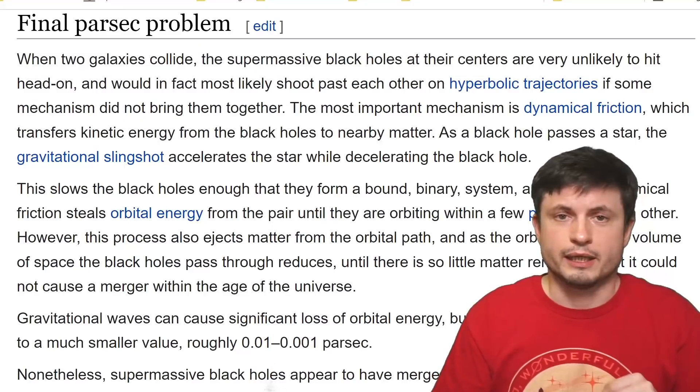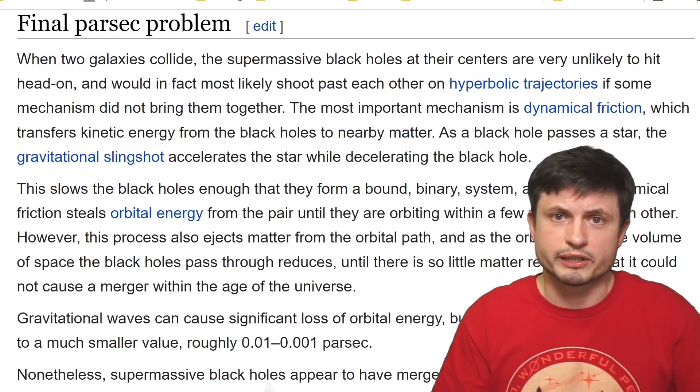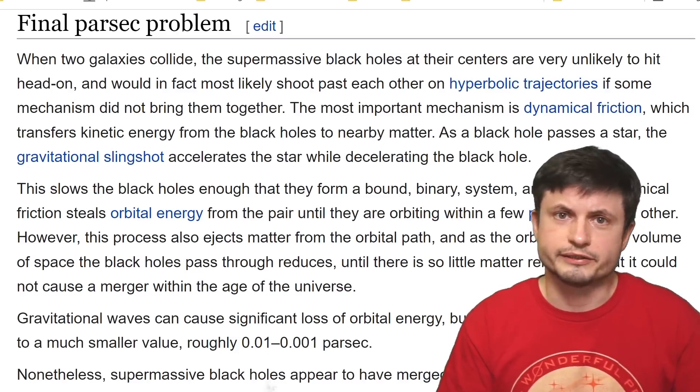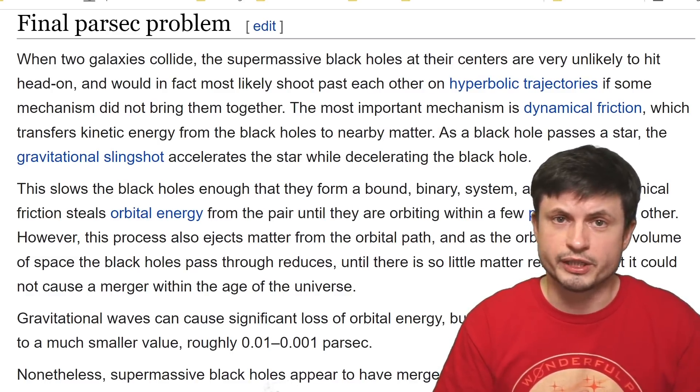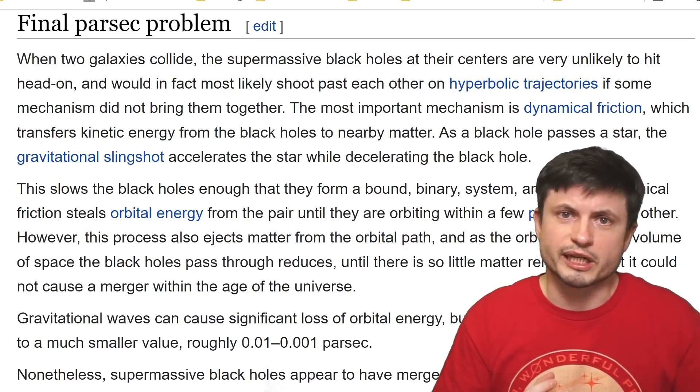And so in theory, they're going to be stuck in these positions possibly for billions or even trillions of years. And that's the essence of the so-called final parsec problem. The word parsec in this case refers to the distance of 3.26 light years. And so once these two massive black holes are at this distance, theoretically at least, they can never really come closer.